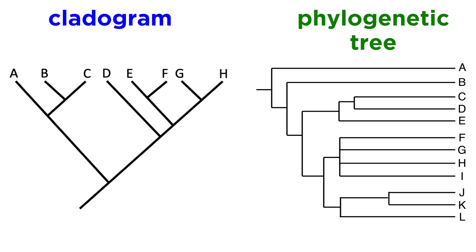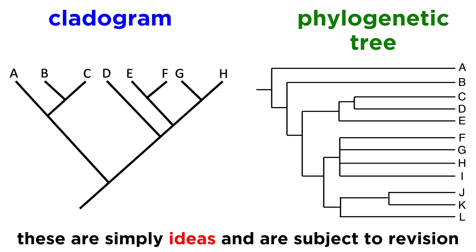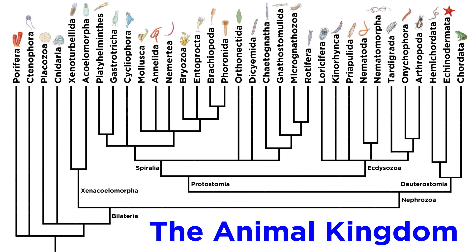Before we wrap up with cladistics, it's important to remember that cladograms, and even phylogenetic trees, are simply ideas. They are useful guides that help us to understand the relationships between animals, but they are not set in stone — they can be rewritten when new discoveries are made. If we were to envision a massive cladogram representative of the entire animal kingdom, this would undoubtedly be edited continually as we learn more about known species and discover new ones. We are now ready to explore kingdom Animalia as a whole, so let's move forward and do just that.